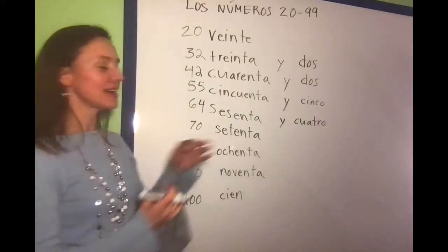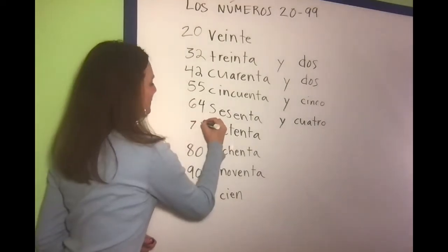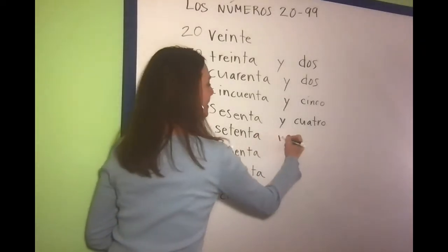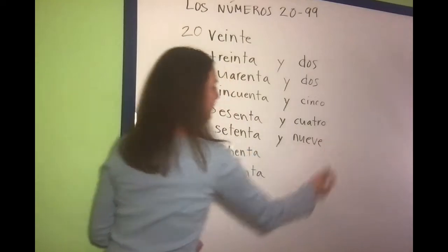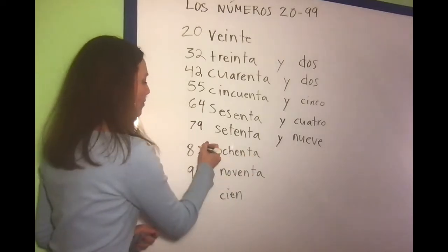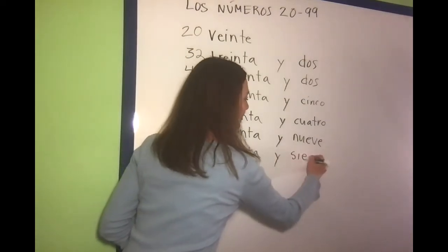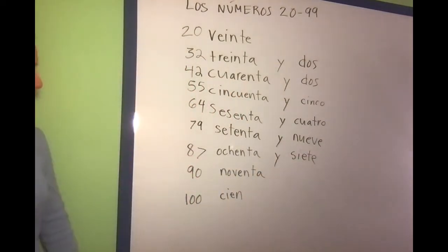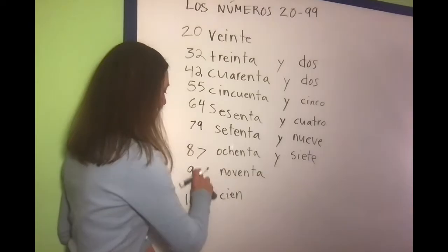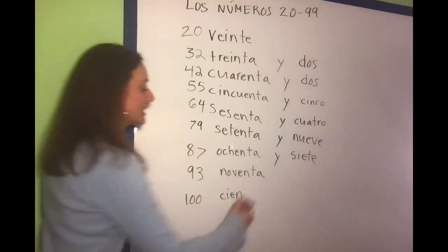We know 70 is setenta. What if I wanted to say 79? How do you say nine in Spanish? Setenta y nueve. What if I want to say 87? Ochenta y siete. And for 93: noventa y tres.